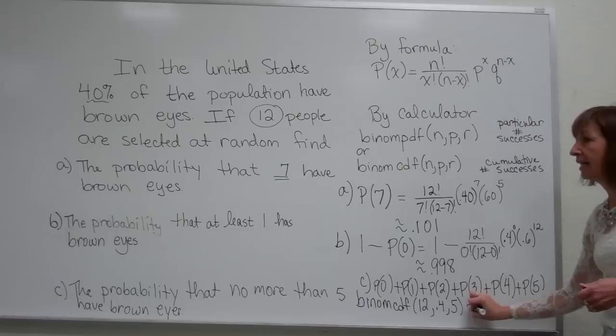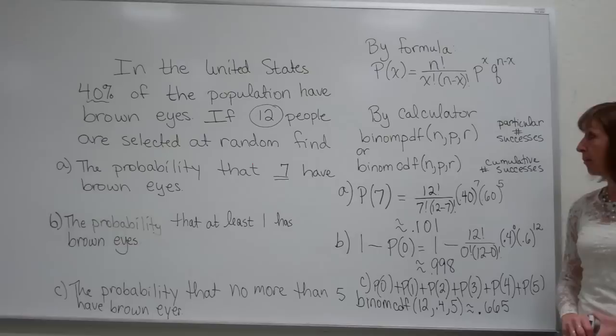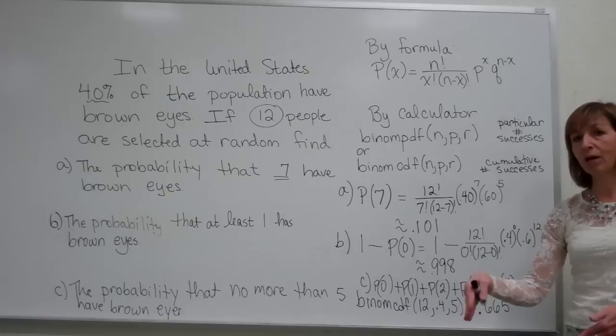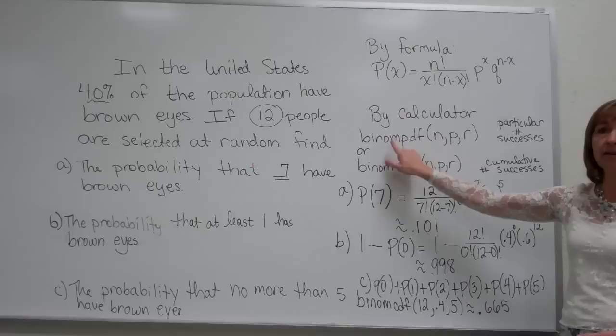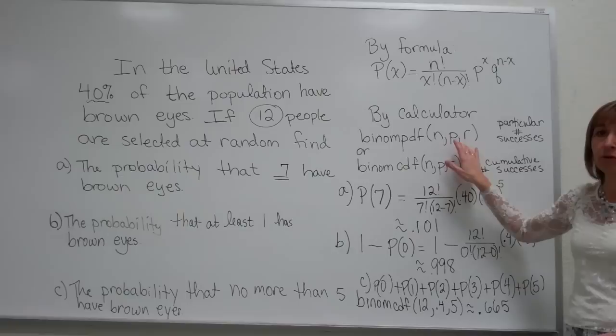That calculation gives approximately 0.665. As a mnemonic device to remember the input order for the calculator, think of NPR — National Public Radio. After entering binomial PDF or CDF, input N for the number of trials, P for the probability of success within a trial, and R for the number of successes you're interested in: the specific value for PDF, or the upper cumulative limit for CDF.